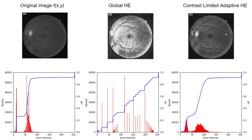The contrast limited part means that the maximum number of pixels that can have a certain intensity value is limited. For example, if there are around 60,000 pixels with an intensity value of 55, contrast limiting reduces that number — here maybe only around 15,000 pixels have an intensity value of around 30.